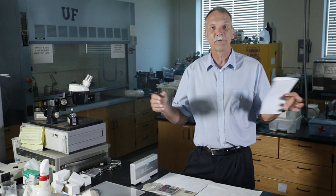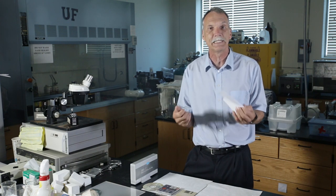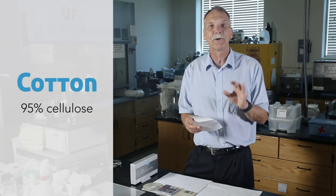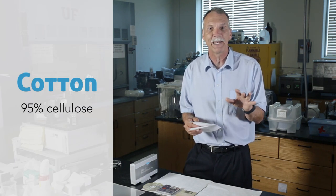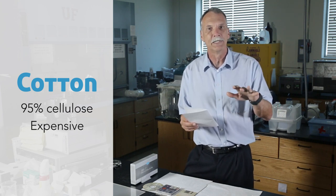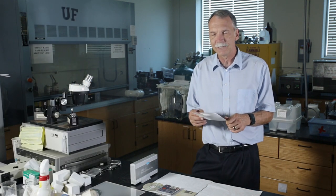When you stitch it together, it can have interesting properties because the chains are so long they actually entangle and give it strength. If I take something like cotton, cotton is 95% cellulose, so it was relatively easy to make paper from cotton. However, it's very expensive. So in the 1840s they started to ask, why can't we find another form of cellulose, another way of making paper?